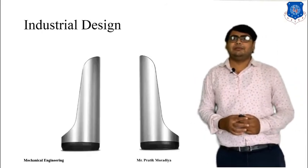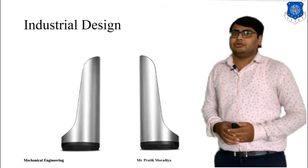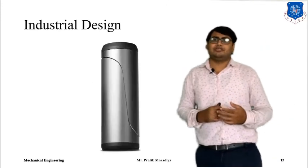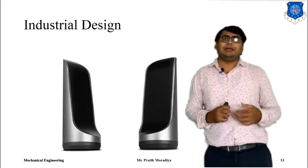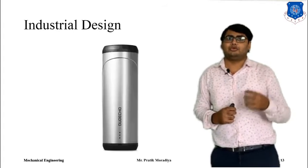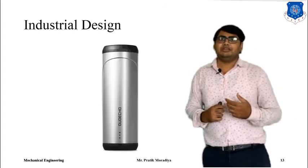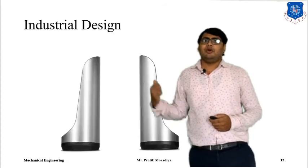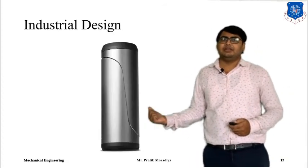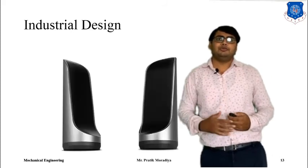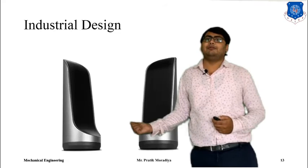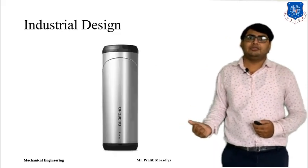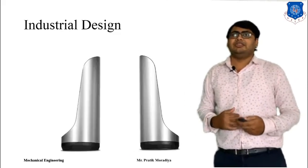Another example is the Coca-Cola bottle. The shape of the Coca-Cola bottle is designed to maximize customer attraction and to match hand ergonomics so that we can grab it very easily. That is also an example of industrial design. These are all the types of engineering design that you will come across during this course, and these terminologies will be very helpful as a reference when we talk about design in the future.